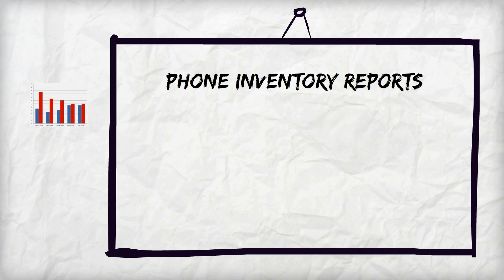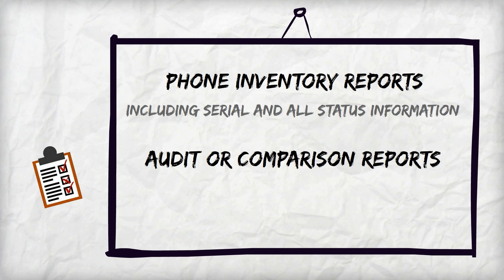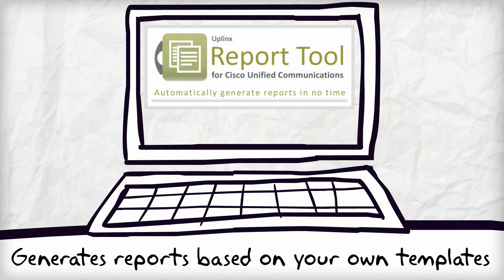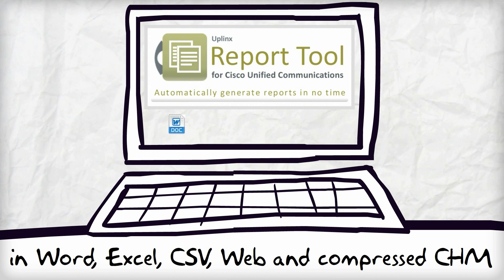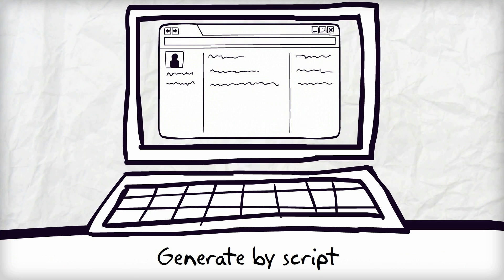Phone Inventory Reports including serial and all status information. Auditor Comparison Reports easily identify changes to CUCM and phone inventories. Our report tool generates reports based on your own templates in Word, Excel, CSV, web, and compressed CHM. You can also schedule report generation by a script and publish to web.